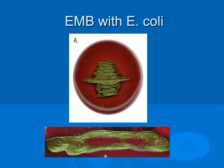EMB agar stands for eosin-methylene blue agar. The purpose of this agar is that it is selective and differential, used for isolating and differentiating various types of bacteria. It is selective in that only Gram negative bacteria will grow, and it also contains lactose. By looking at the color of the colonies, one can determine whether or not the bacteria ferment lactose. Clear colonies indicate no fermentation of lactose, while pink colonies indicate lactose fermentation occurs. In addition, E. coli will develop a metallic green sheen on the colony, so EMB can very quickly identify E. coli anytime we see metallic green growing on the colony.